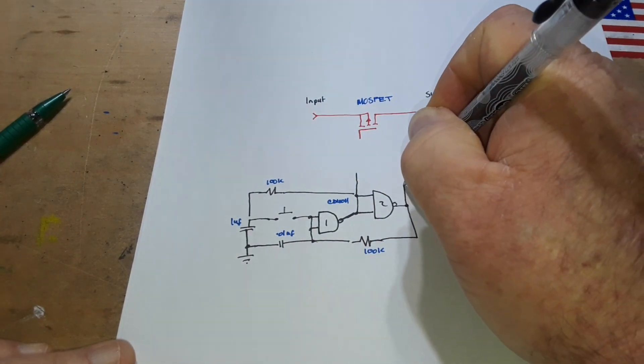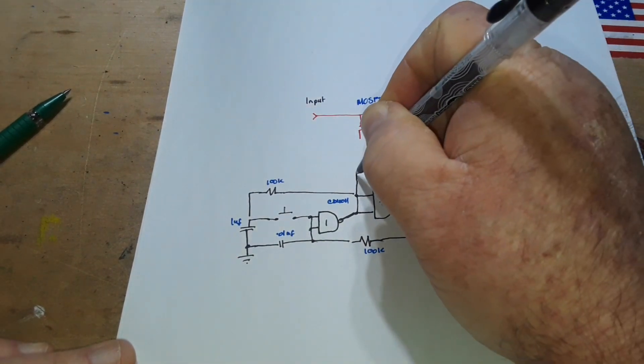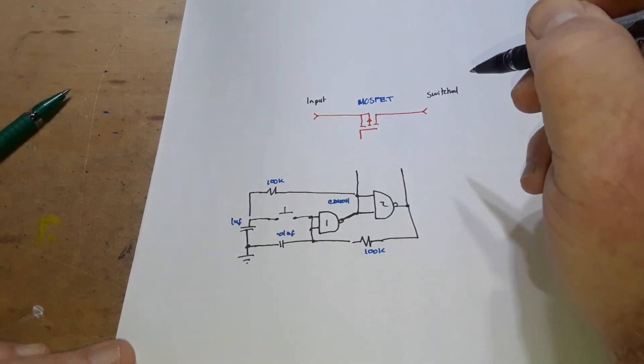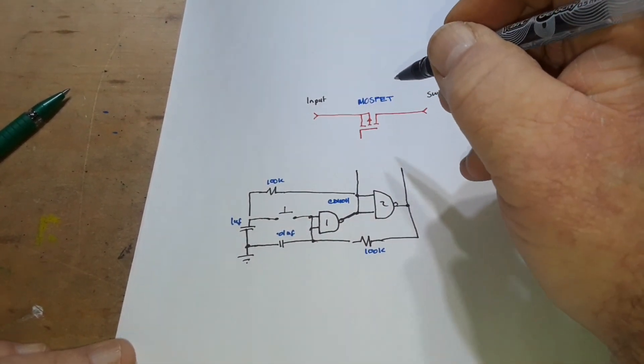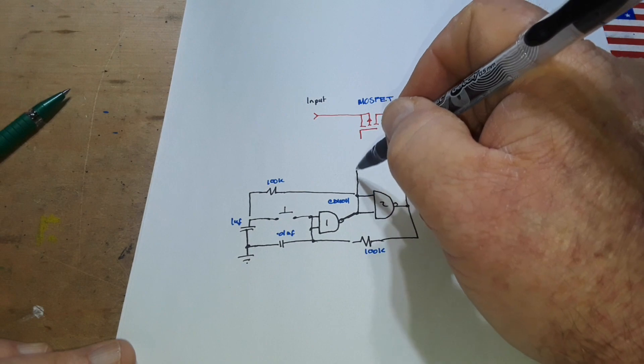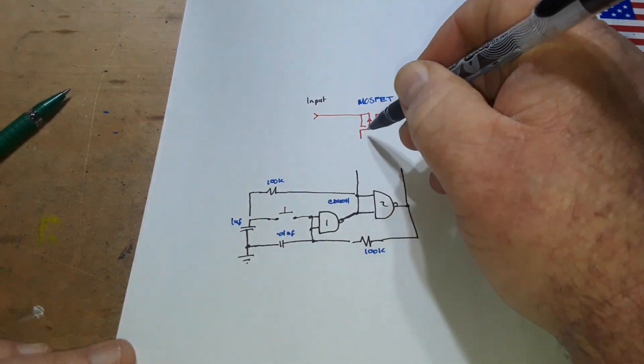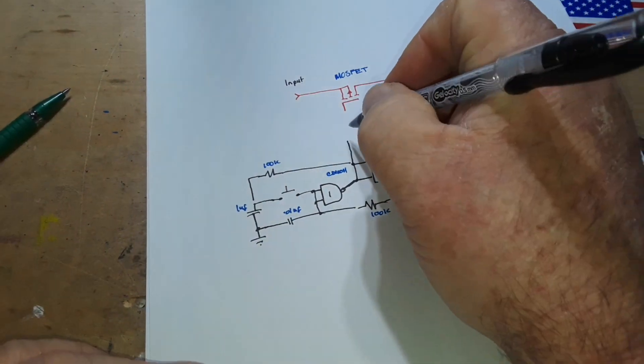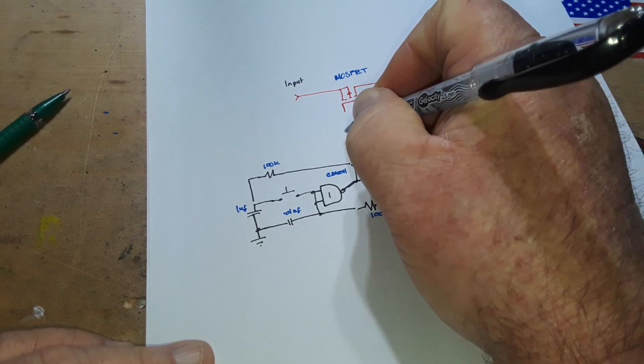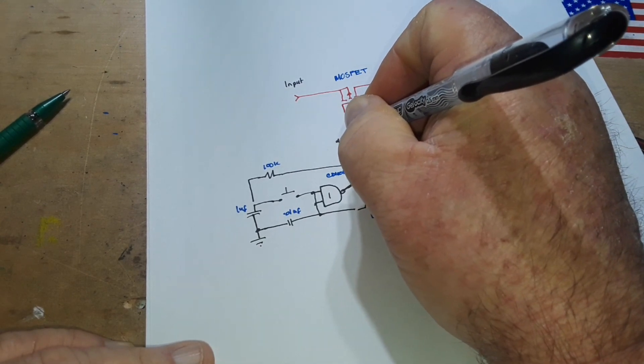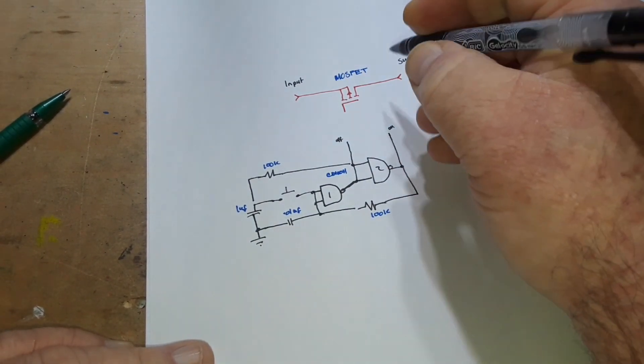Like a line from here and a line from here. Now depending on where we attach the MOSFET, this would be off, this would be on.